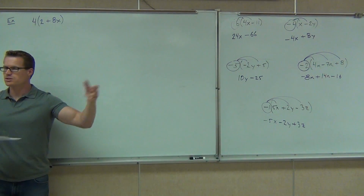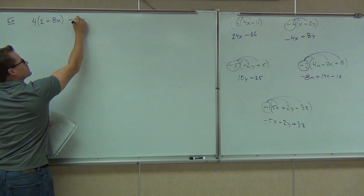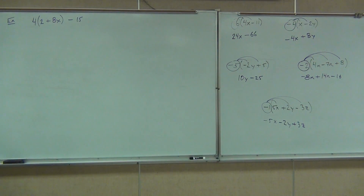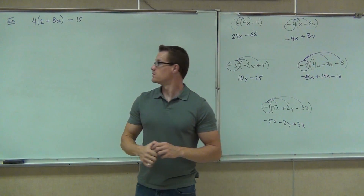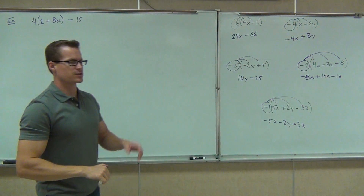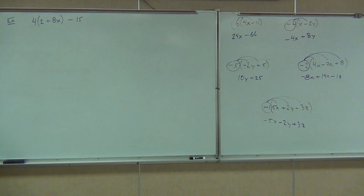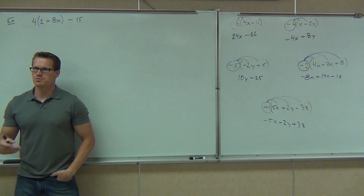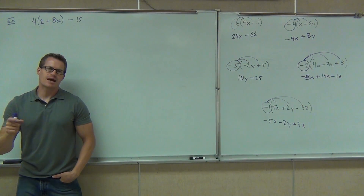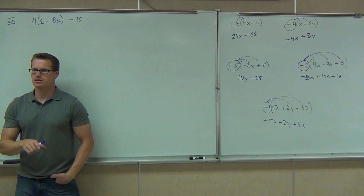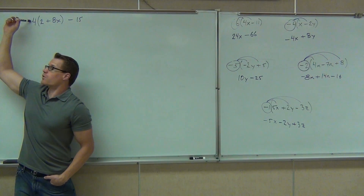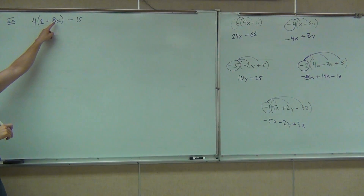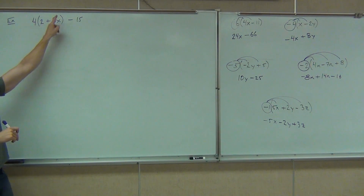Now I'm just going to keep adding things onto it. So what would happen if I do this and then subtract 15? That's all I'm doing — I'm just going to add more and more to these problems. So that would be negative 15, minus 15 at the very end. Now, does this 4 get distributed to the 2 and the 8? Just the 2? Just the 8? The 2, the 8, and the 15? Which one? Just the 2 and the 8.